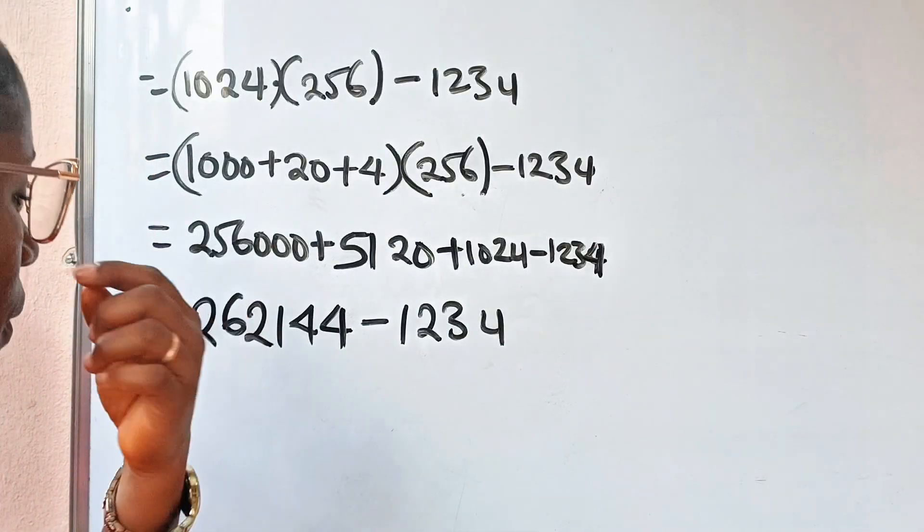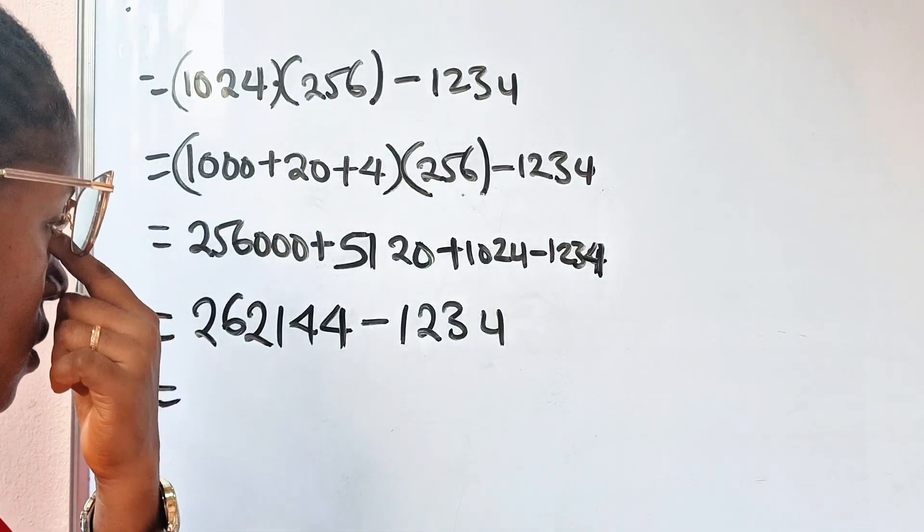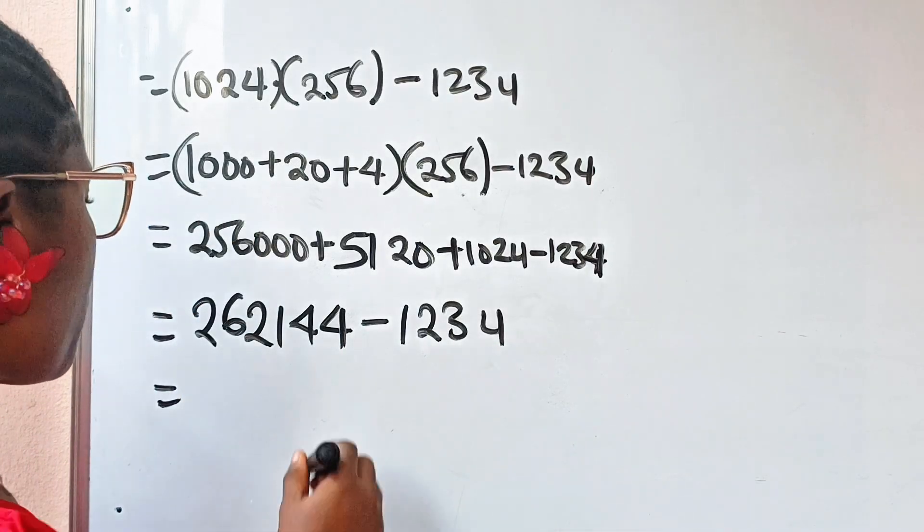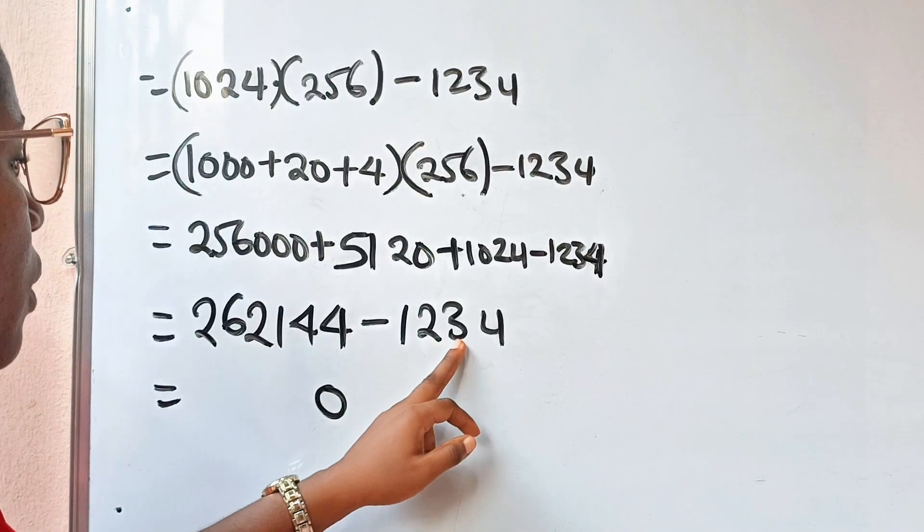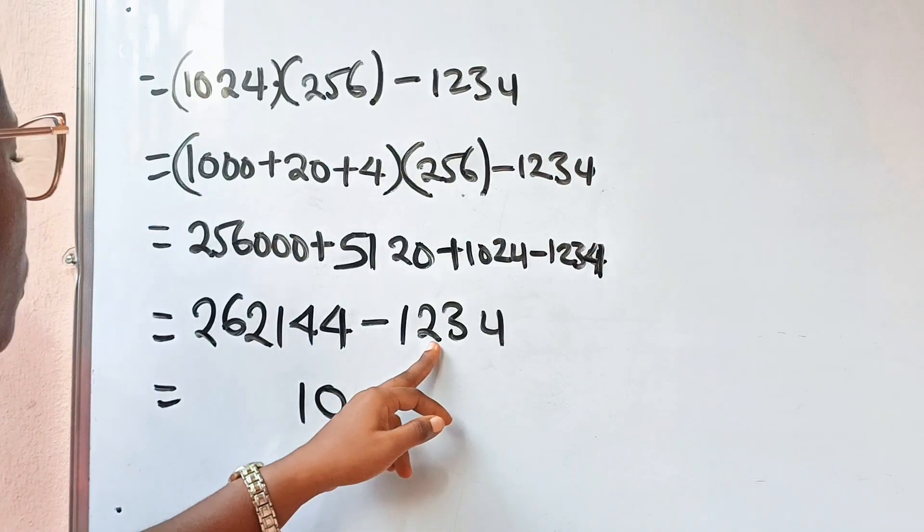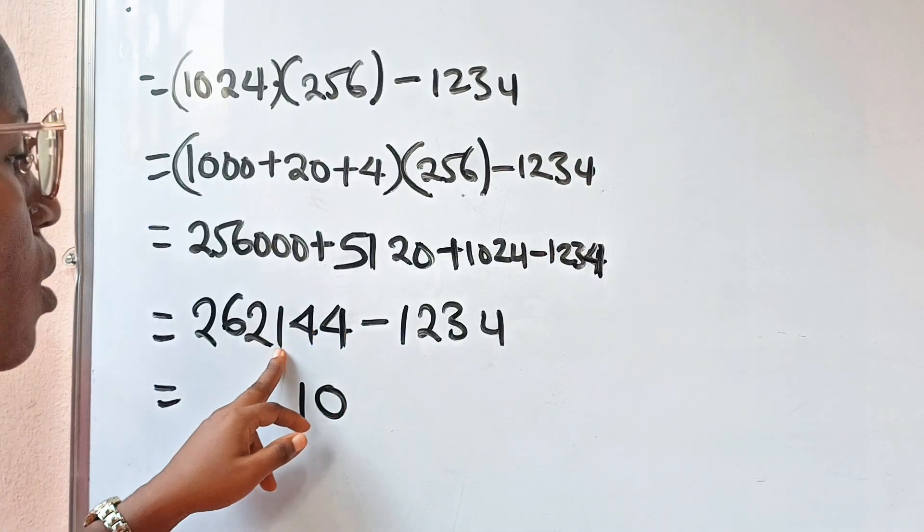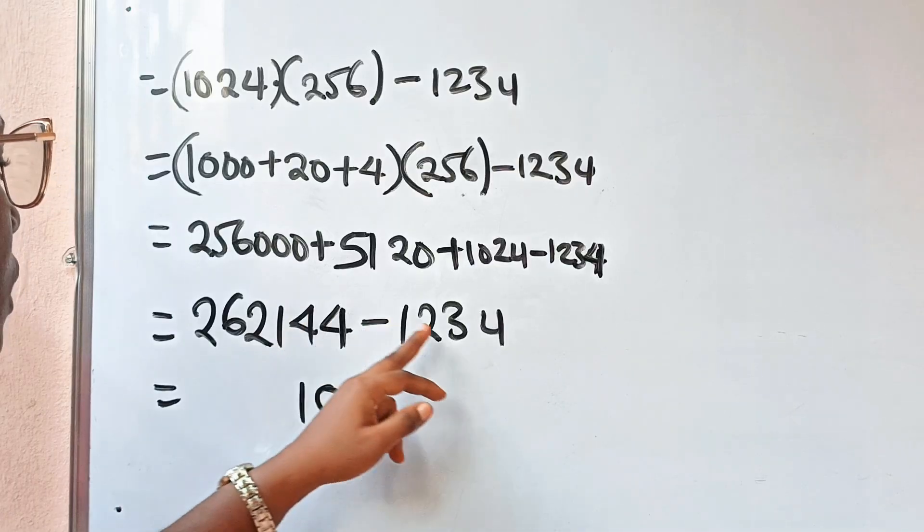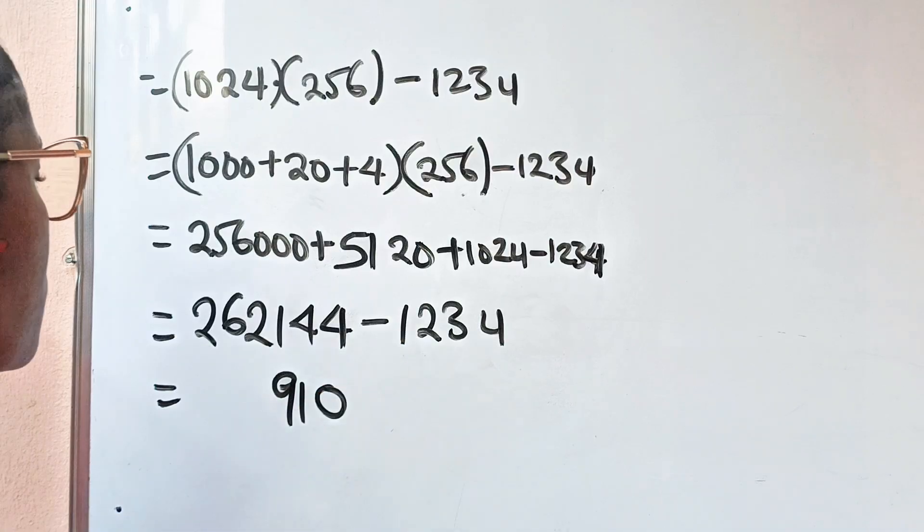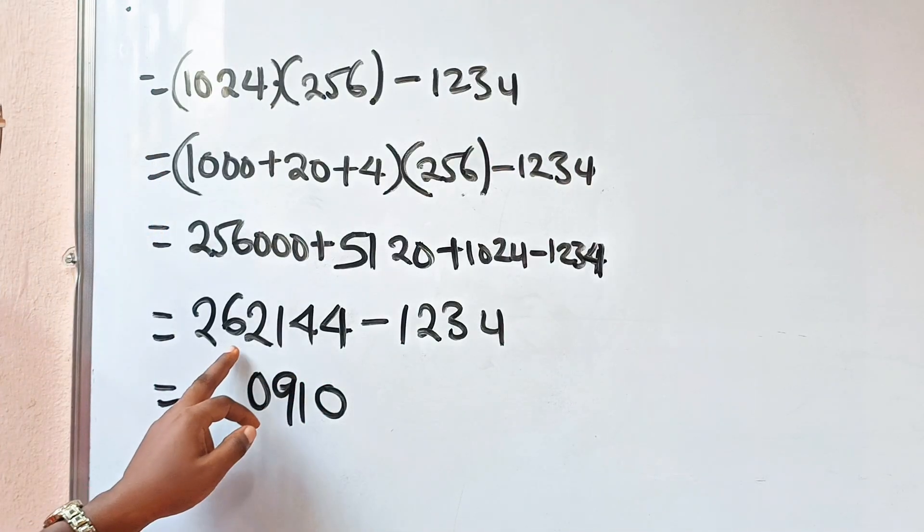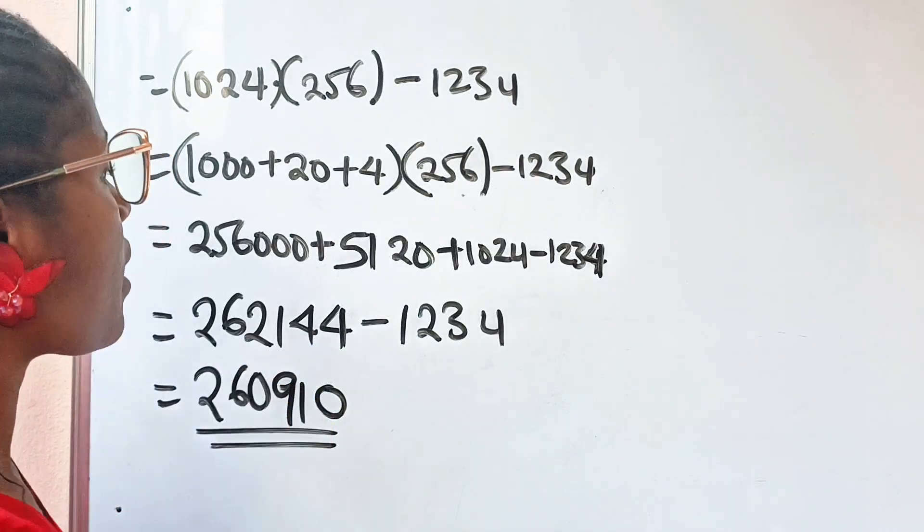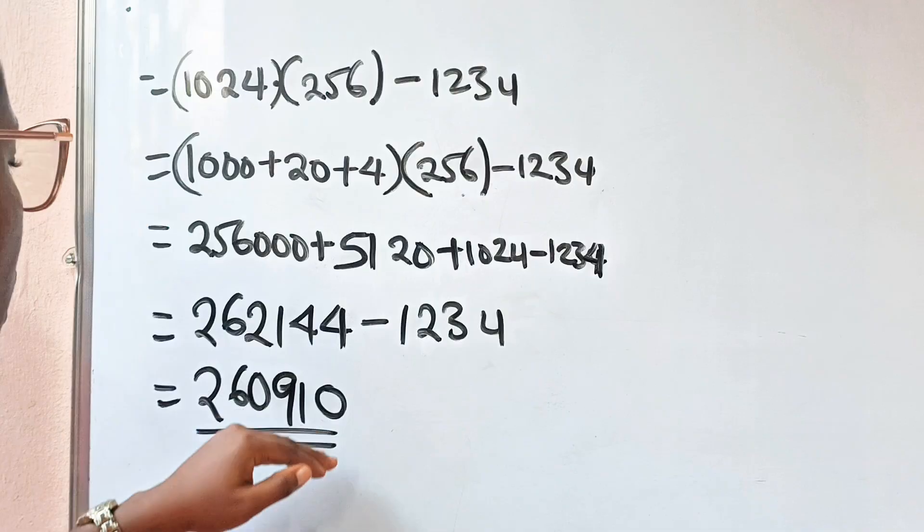This is equal to... Now, we are going to start from the first number from the back. 4 minus 4 is 0. 4 minus 3 is 1. Then, the third line, 1 minus 2 is not possible. We borrow 1 and add it to becomes 11. 11 minus 2 is 9. So, now we have 1 here. 1 minus 1 is 0. So, we are left with 2 and 6. We bring them down. And, this is the answer. If I do not make a mistake in the calculation, okay?